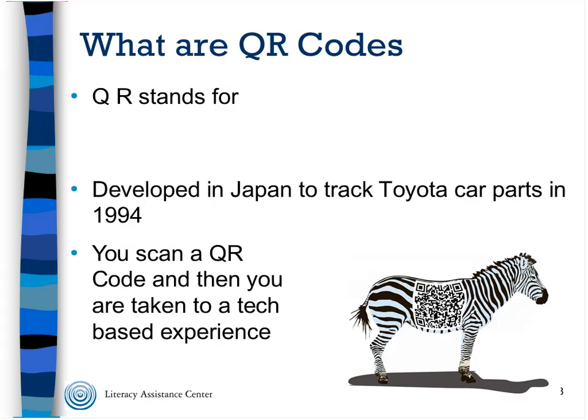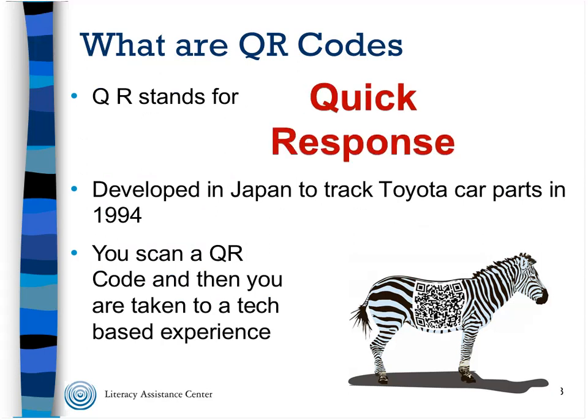So what does QR code stand for? QR stands for Quick Response. These were actually developed in the 90s and were originally used for looking at and tracking car parts in the manufacturing of Toyota cars in Japan.